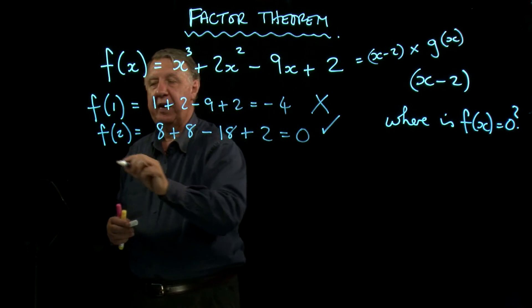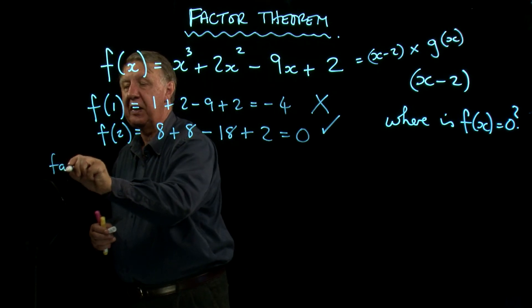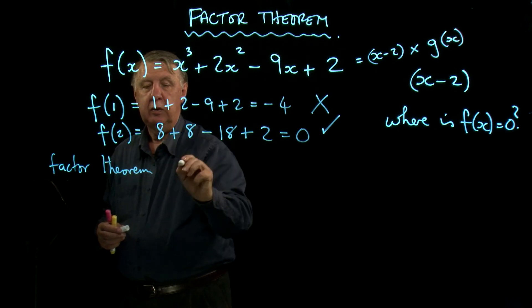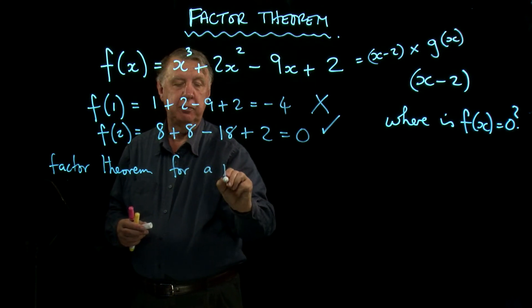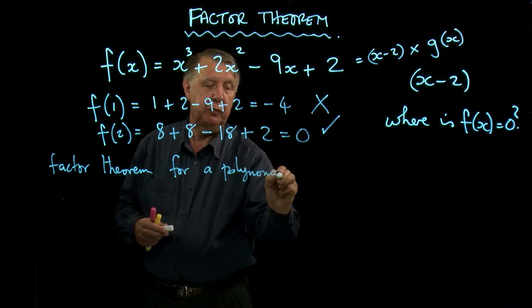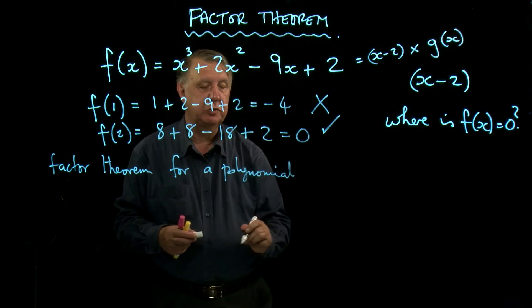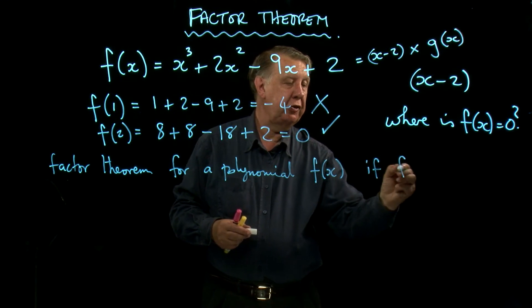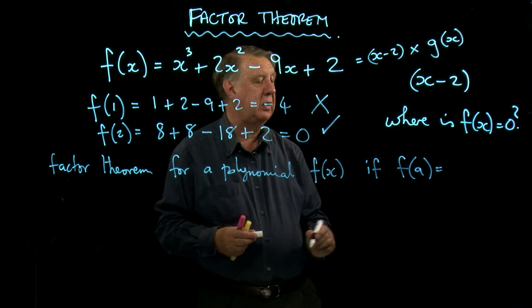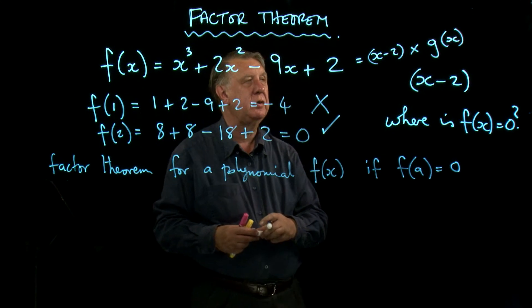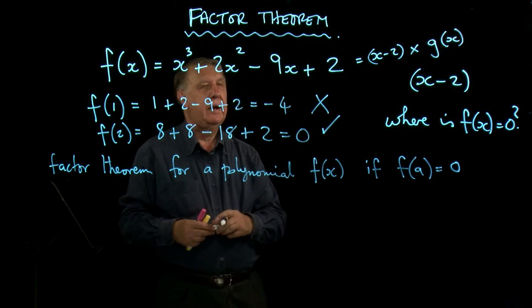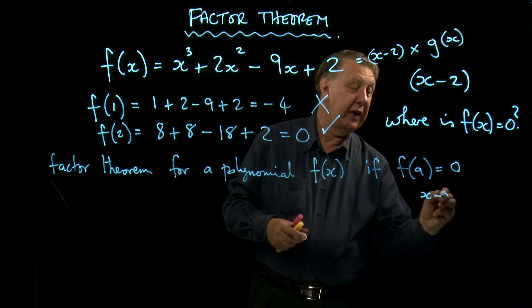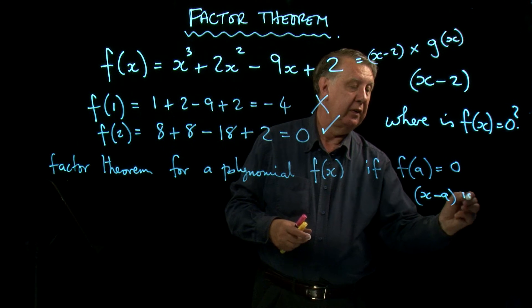So we have the factor theorem. And the factor theorem says that for a polynomial f(x) - remember this is only to do with polynomials - if function a, so if I find some number f(a) that makes it 0, that means that x - a is a factor.